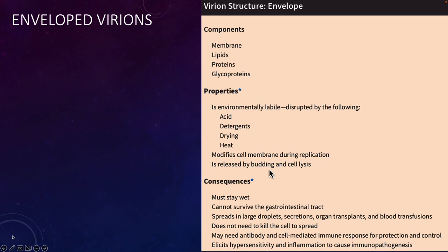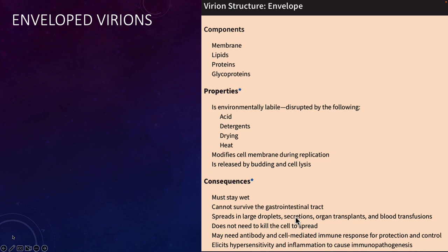During replication, enveloped viruses modify the host cell membrane and can be released by budding — they push their way out and grab a piece of the membrane as a coat to hide from the immune system. They can also mediate cell lysis. Because of their lack of environmental stability, they have to stay wet; if they dry out, they lose infectivity. These generally cannot survive the GI tract, and tend to be spread in large droplets, secretions, organ transplants, and blood transfusions.